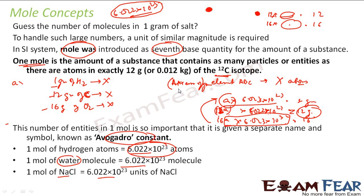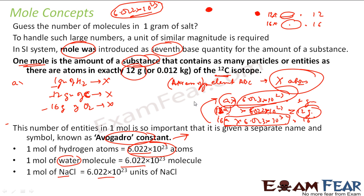The general formula is: you take the atomic mass N of any element, you take N grams of that element, and that will always have 6.023 × 10²³ atoms. That is why this number became very famous, and it is named the Avogadro constant in honor of the chemist Avogadro. So 1 mole is the amount of substance that contains as many particles as there are atoms in 12 grams of carbon-12 isotope, which is 6.023 × 10²³ atoms.